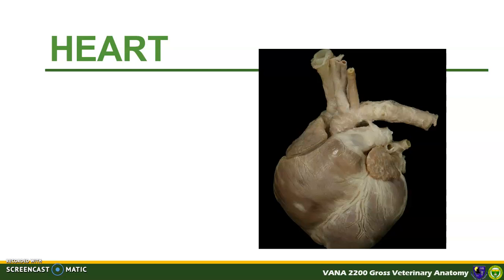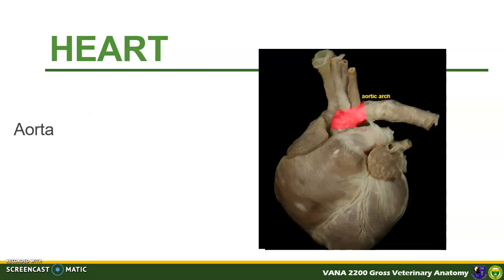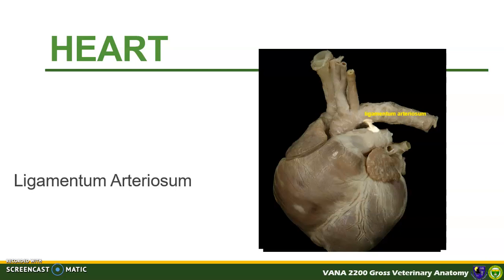We can also recognize some of the great vessels at the base of the heart — the pulmonary trunk and the aorta with the aortic arch and its main branches, which will be discussed in detail when we tackle blood vessels. In between these two arteries is the ligamentum arteriosum, the remnant of the fetal ductus arteriosus connecting the pulmonary trunk and the aorta.